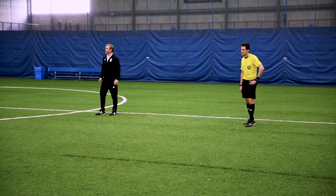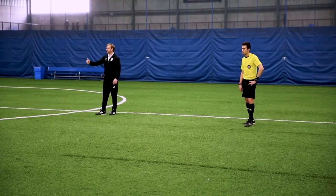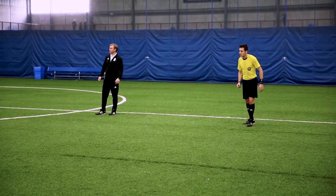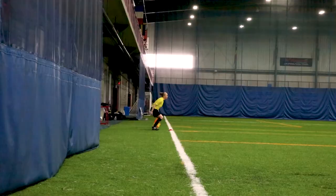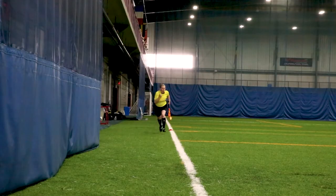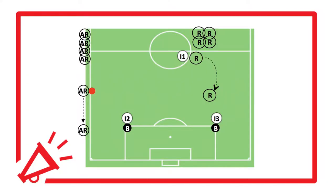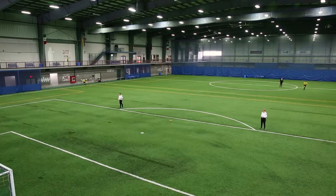The first referee will run towards the penalty area. When he begins to run, the active AR will run from the red cone, sprinting to reach instructor two or three who are acting in the role of second last defenders.